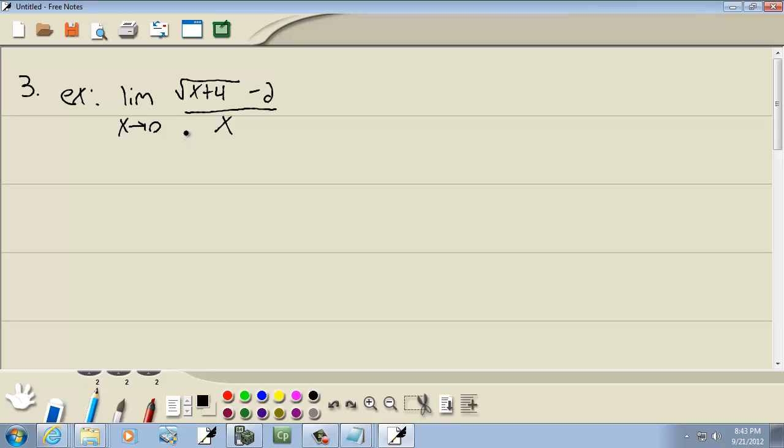Now if I plug 0 in for x right now, we'd have a 0 in the denominator which we can't have. So what we're going to do is multiply the top and bottom by the conjugate of the top.